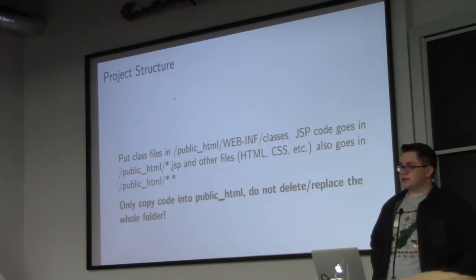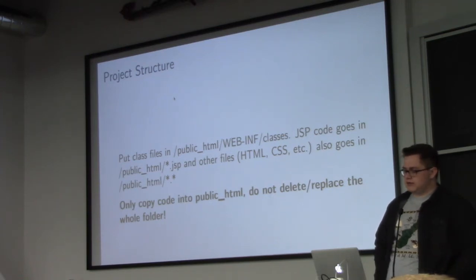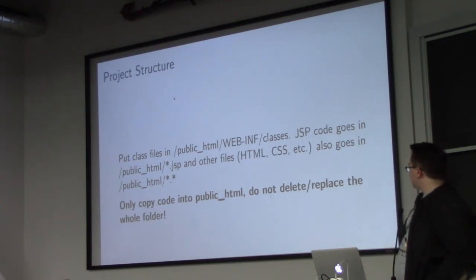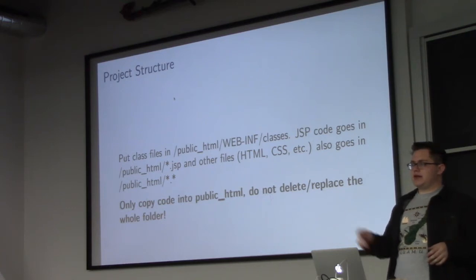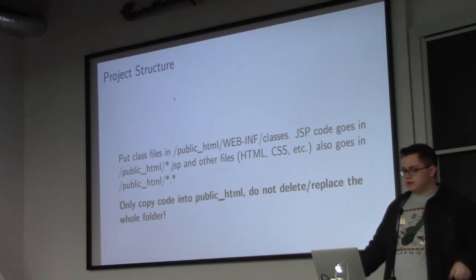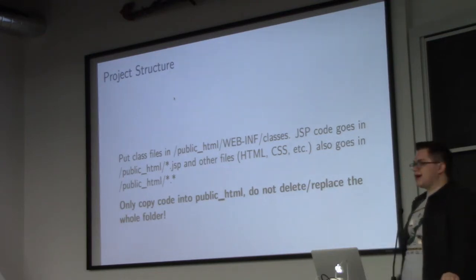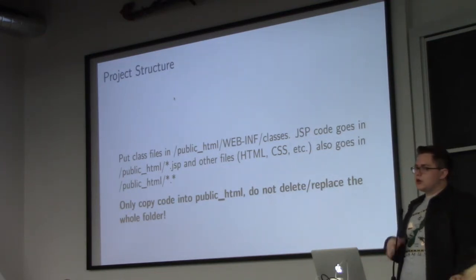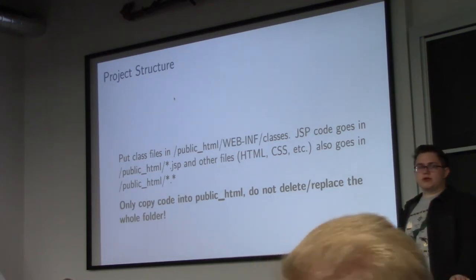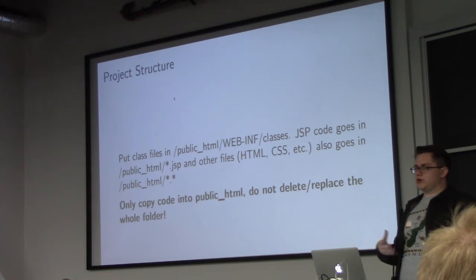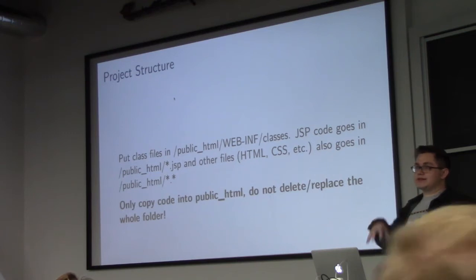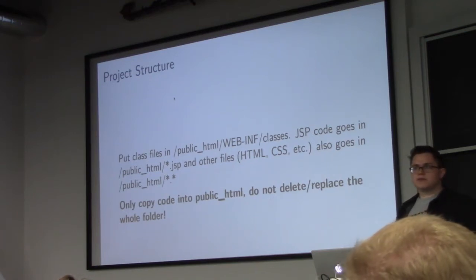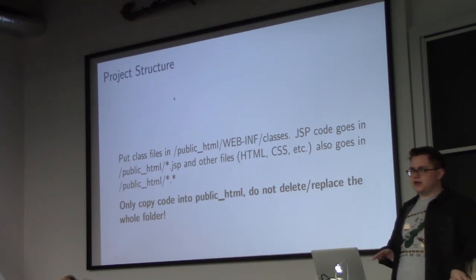If you want to include Java code — which is the smart thing so you don't have to rewrite everything from phase two — you put it in public_html/WEB-INF/classes. From there, like we showed earlier, you can use the import statement to include those files. One important thing: when copying files back and forth between your machine and the remote server, don't copy and overwrite the public_html folder itself, because it has special permissions required to run on the server. If you override it, it'll break everything. Only copy files inside that folder.